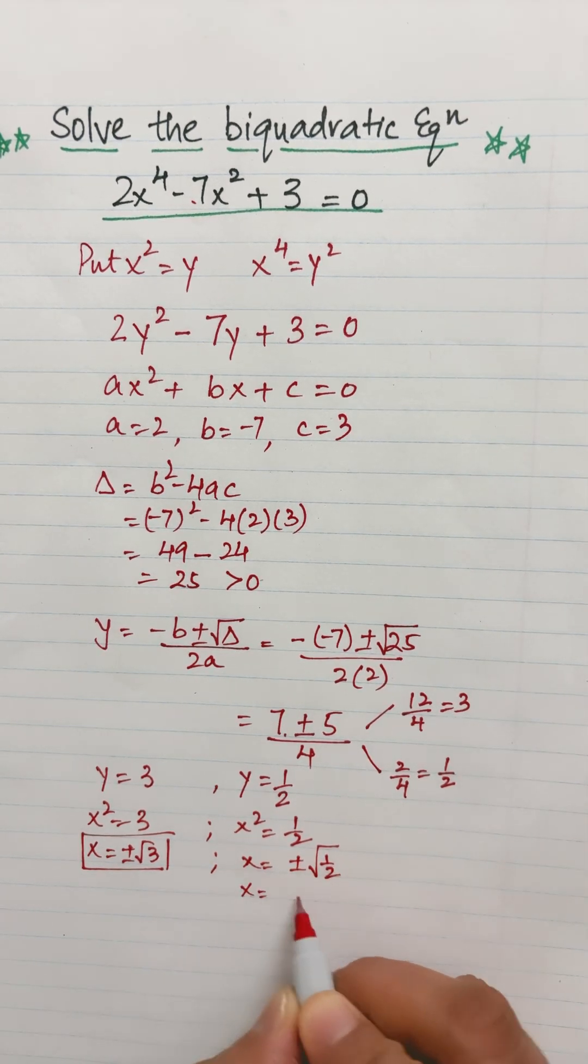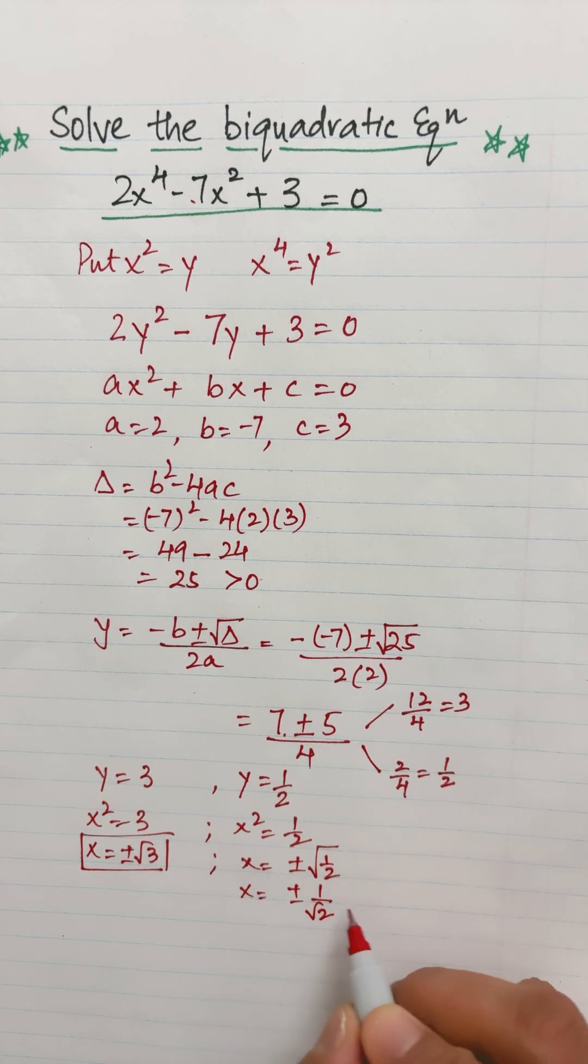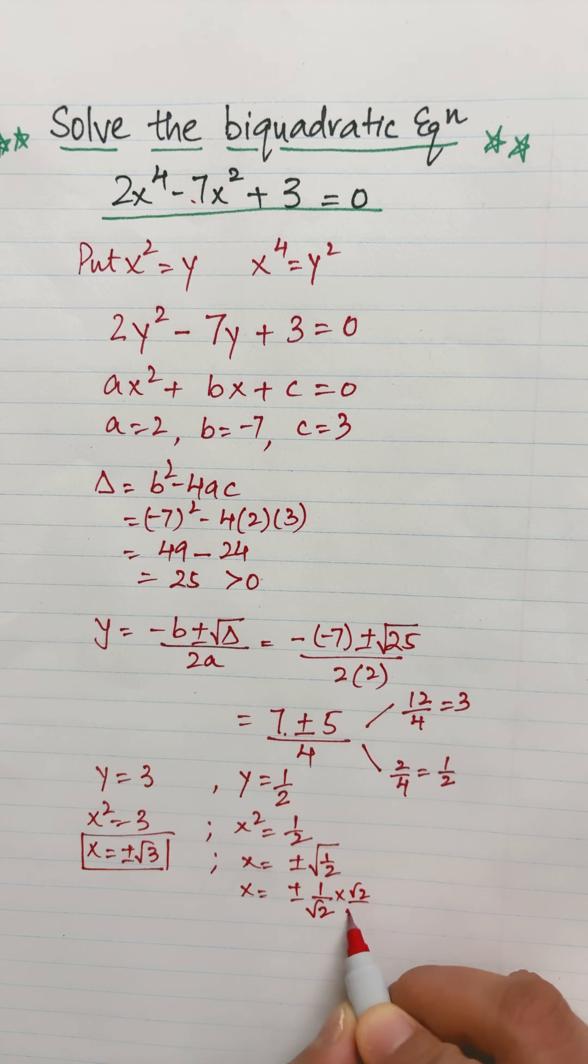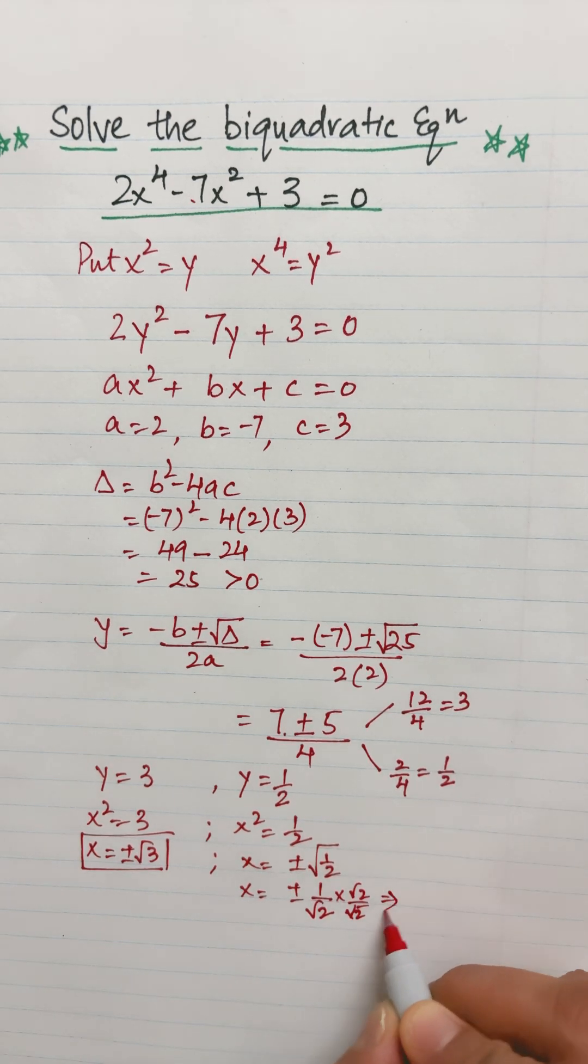We never leave irrationals in the denominator, so I'll make it rational by multiplying the denominator with root 2 over root 2. So it will give me x equals plus minus root 2 over 2.